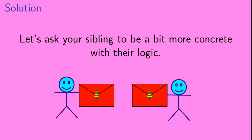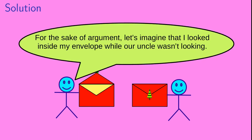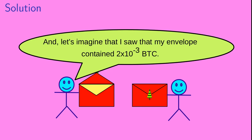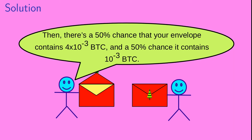So let's ask your sibling to be a bit more concrete with their logic. Your sibling says: for the sake of argument, let's imagine that I looked inside my envelope while our uncle wasn't looking, and I saw that my envelope contained 2×10⁻³ bitcoin. Then there's a 50% chance that your envelope contains 4×10⁻³ bitcoin, and a 50% chance it contains 10⁻³ bitcoin.